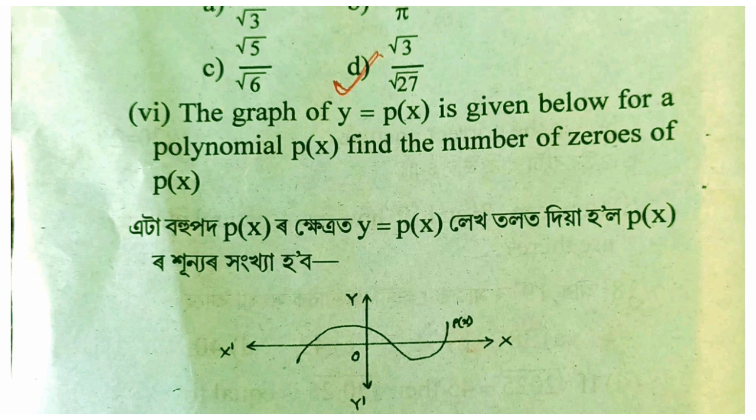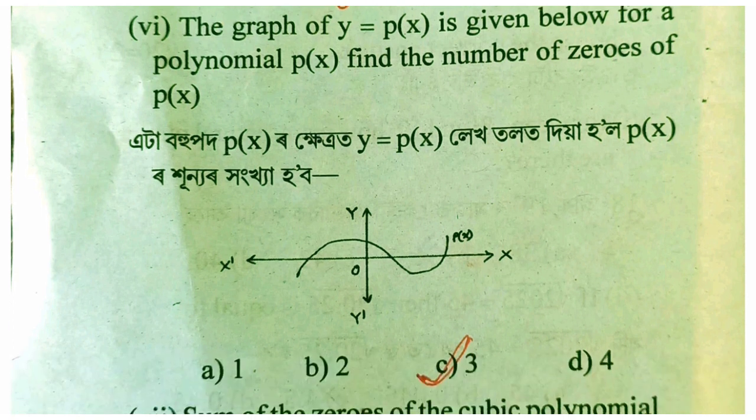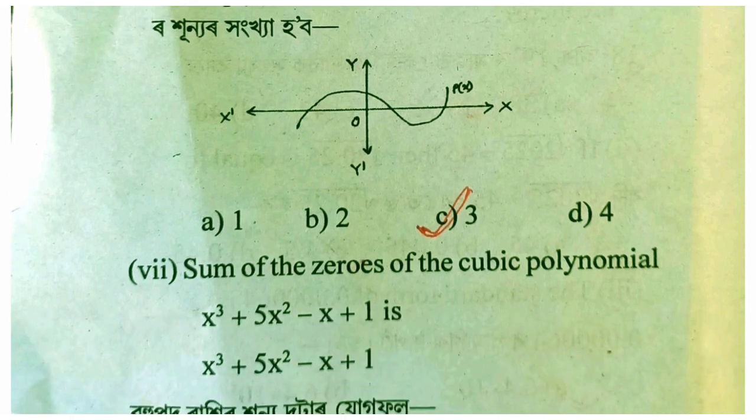The graph of y equals p(x) is given below for a polynomial p(x). Find the number of zeros of p(x). The graph of y equals p(x) is given below for a polynomial p(x).